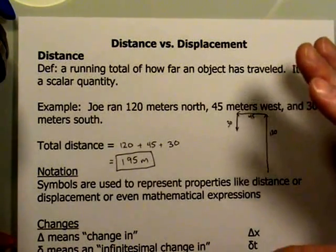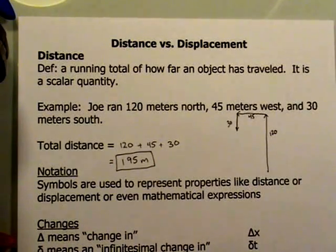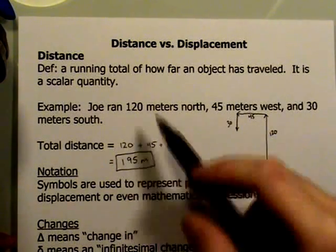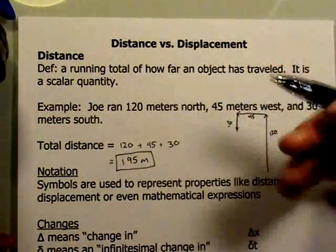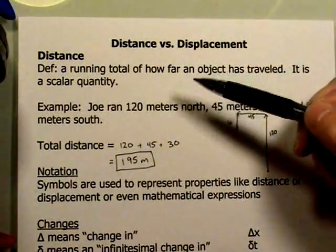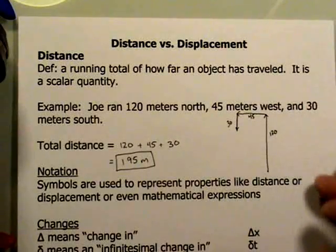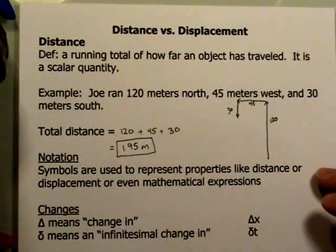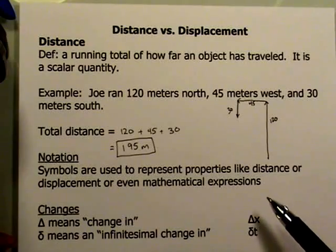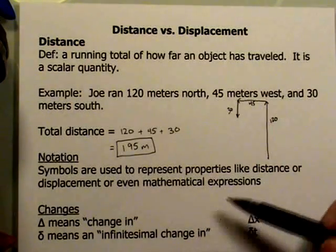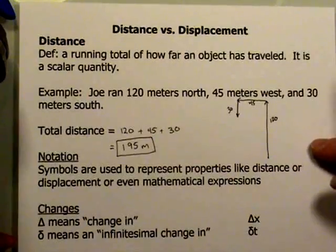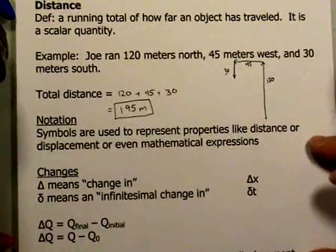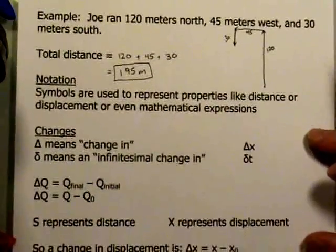We have two quantities and the issue of keeping track of the notation — how do you indicate the difference between when you're talking about distance or displacement? Typically we don't want to write the words out, so we use symbols and letters to represent these quantities. Notation refers to the symbols that represent properties like distance or displacement, or even mathematical expressions. Let's take a look at some mathematical expressions rather than the physical properties.